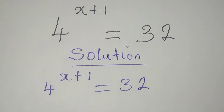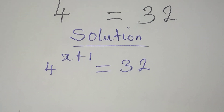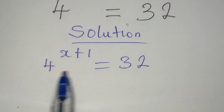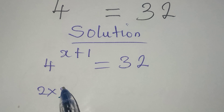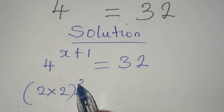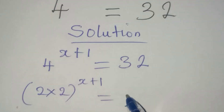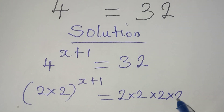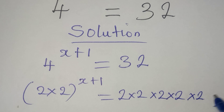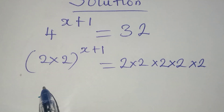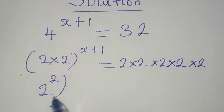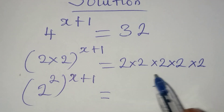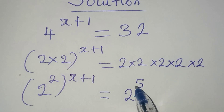We are going to equate the bases to deal with this. Here we have 4, and 4 is 2 times 2, so that's 2 squared to the power of x plus 1. And then we have 32, which is 2 times 2 times 2 times 2 times 2 — that gives us 2 to the power of 5. So 2 squared to the power of x plus 1 equals 2 to the power of 5.